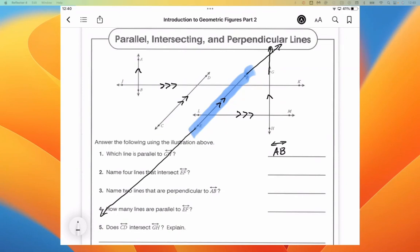GH also continues up this way forever, and AB continues down this way forever. So, four lines that intersect EF, we need to consider those other lines, even though they don't intersect it yet, we need to consider that they would if we extended them.